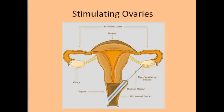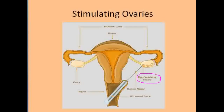In this diagram, you can see the egg retrieval process. Here we have an ultrasound probe which guides the needle. In the ovary, we have egg-containing follicles. The needle, guided by the ultrasound probe, collects the eggs. This entire instrument is inserted through the vagina.